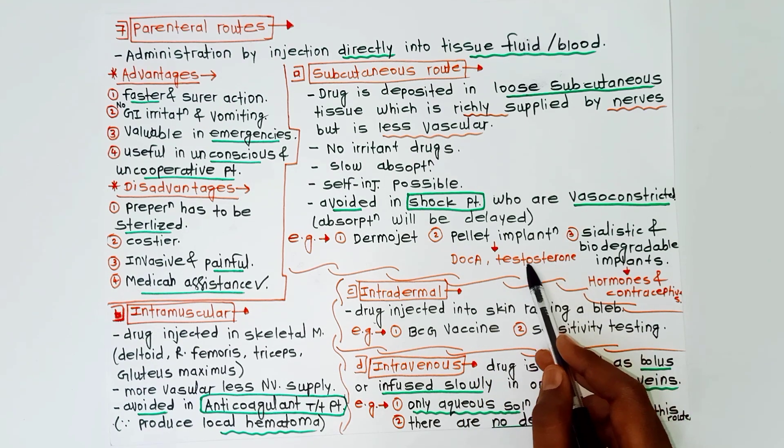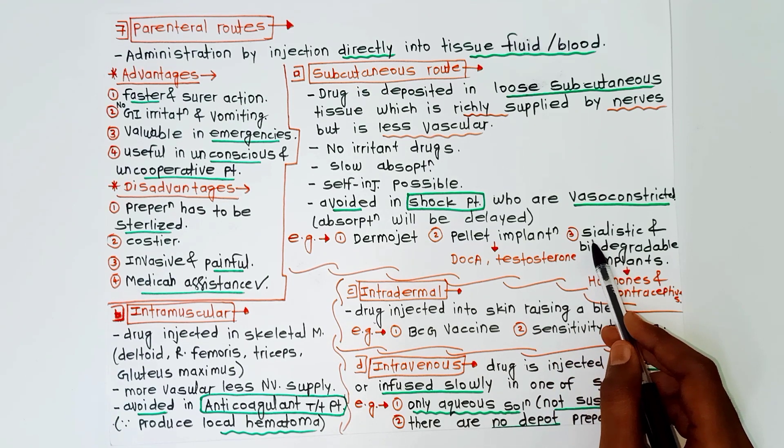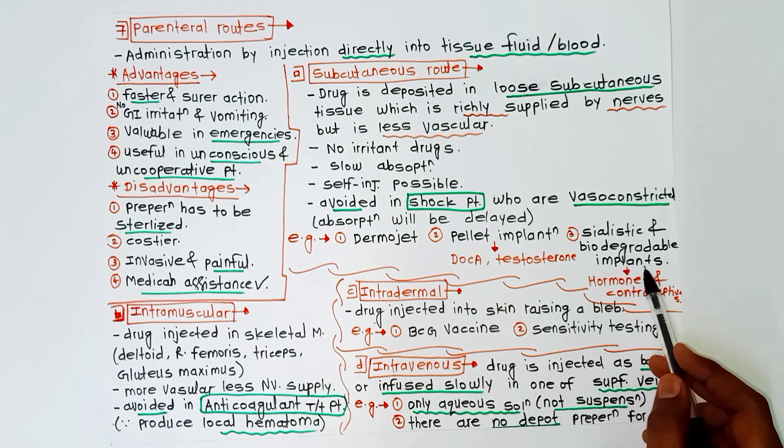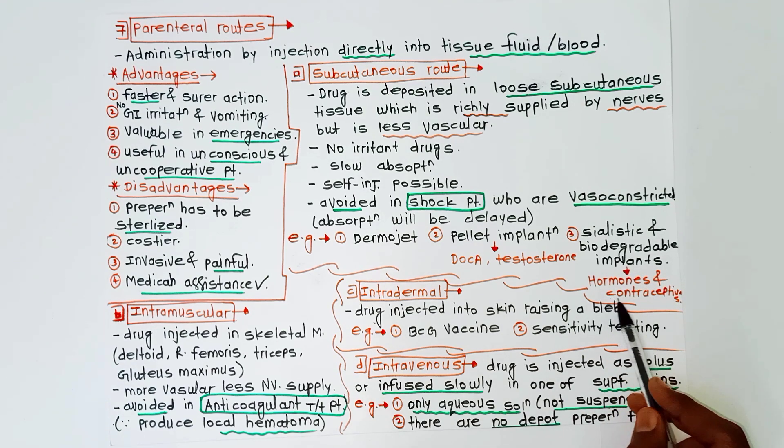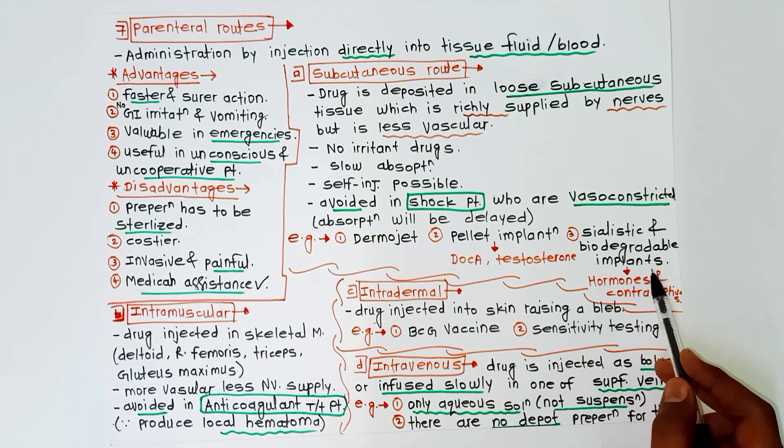Examples of subcutaneous route are: dermo jet, pellet implantation - in this case the drugs DOCA and testosterone are given, these are steroids. And silastic and biodegradable implants - third example is in this case hormones and contraceptives are given by silastic and biodegradable implants.